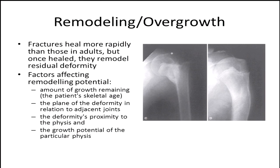Another issue that makes pediatric trauma patients a little bit different is their ability to remodel and the ability for overgrowth. These fractures, in general, heal more rapidly in the pediatric population, and even once healed, they have a tremendous ability to look normal again later in life. In my practice, we see a lot of kids with displaced proximal humeral fractures — and as Dr. Herman also taught, the majority do very well and you don't necessarily have to fix them all. The factors that affect remodeling potential include patient's age, the plane of deformity in relation to the joints — deformity in the sagittal plane corrects better than in the coronal plane — deformity proximal to the physis remodels easier, and the growth potential at the particular physis. The physis in the knees is more active than, say, the proximal femur.